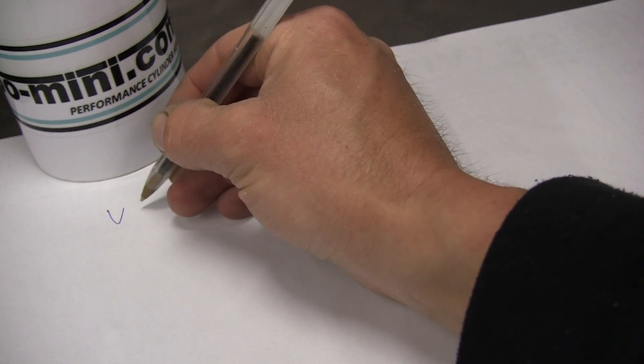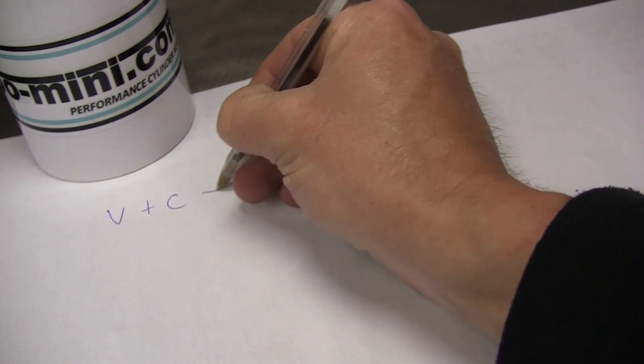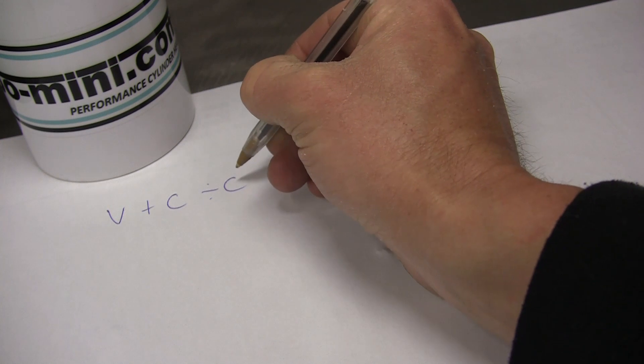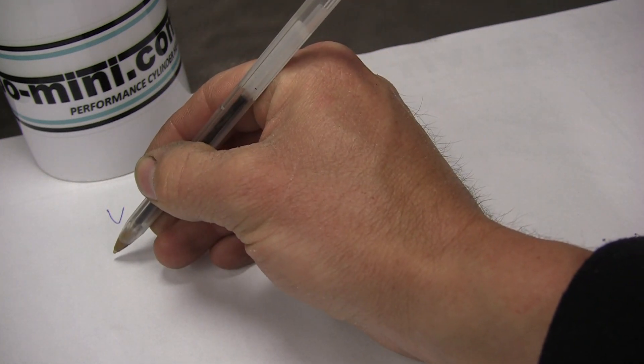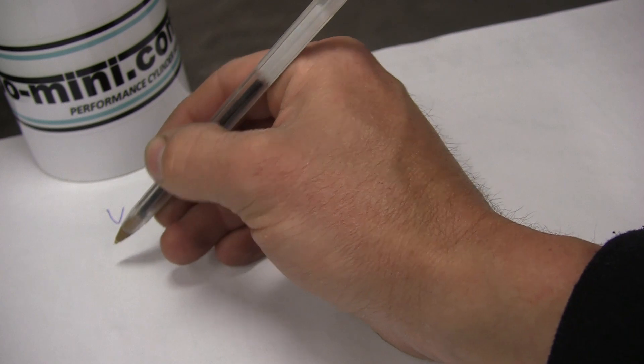If you know your engine capacity, it's really easy to work out, and I'll show you how now. The calculation goes as follows: V plus C divided by C.